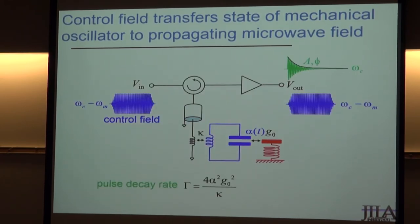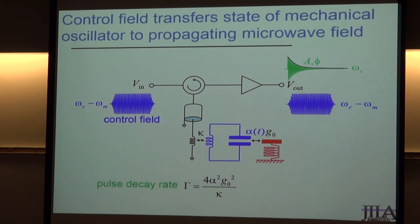The sign of the detuning matters rather drastically. If you detune in the other direction, instead of a pure conversion or beam-splitter-like interaction, you get parametric down-conversion — you create phonons and photons in pairs. We have a paper in Science about creating entanglement between microwave pulses and mechanical motion using that approach.